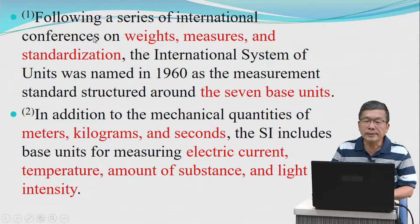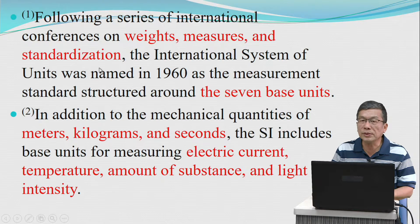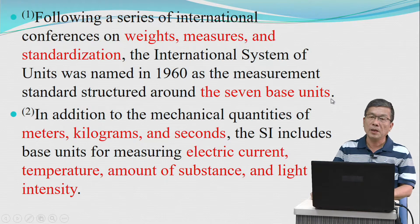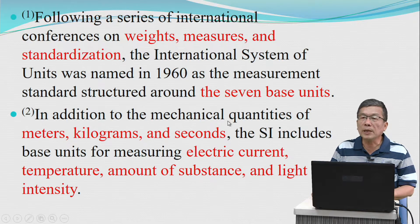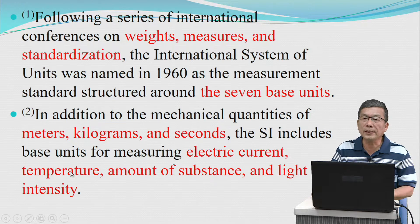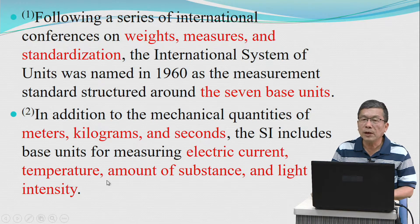Following a series of international conferences on weights, measures, and standardization, the international system of units was named in 1960 and the measurement standard was structured around seven base units. In addition to the mechanical quantities of meter, kilogram, and second, the SI includes base units for measuring electric current, temperature, amount of substance, and light intensity.